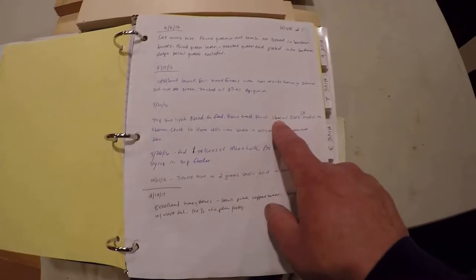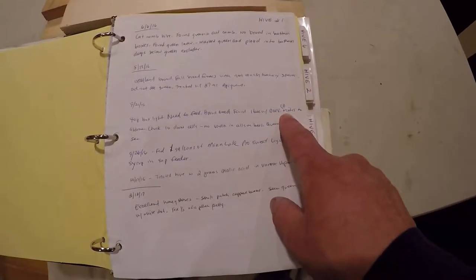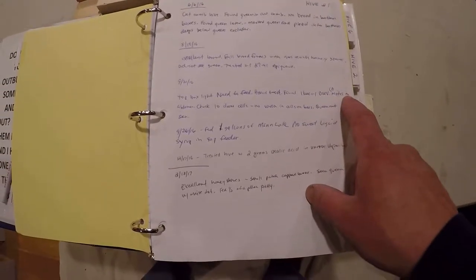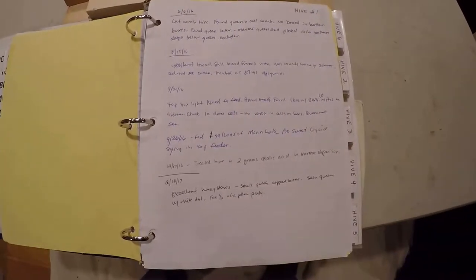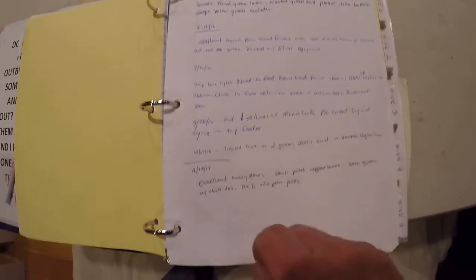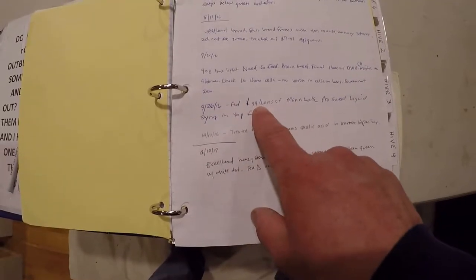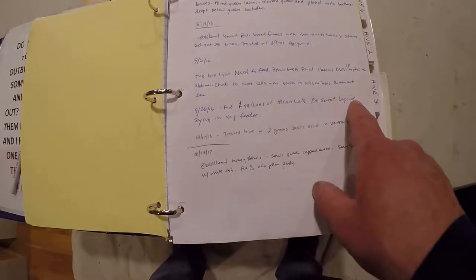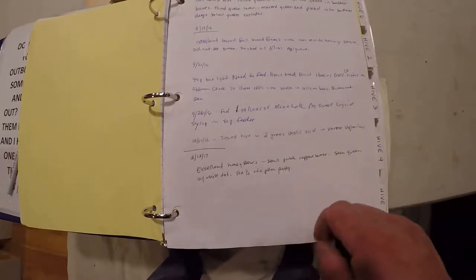I found one bee with deformed wing virus and mites, and I seen them on the abdomen. I believe this is probably the time I actually had the bee inspector out on that date, and we marked all this information. We checked the ten drone cells, no varroa on the cells and the bees. Still didn't see the queen. On the 26th, fed one gallon of Mann Lake pro-sweet liquid. Actually had a five-gallon bucket and utilized that.